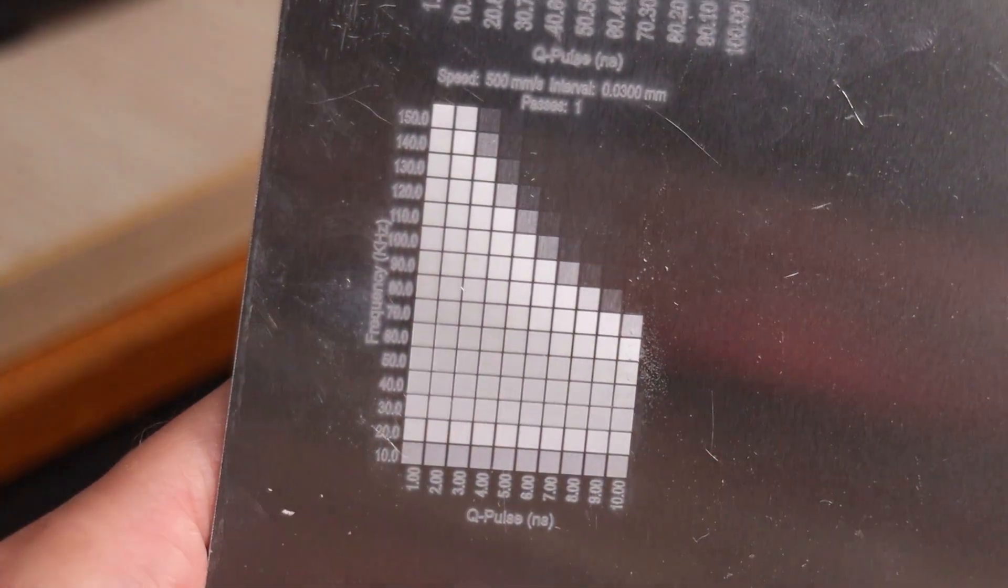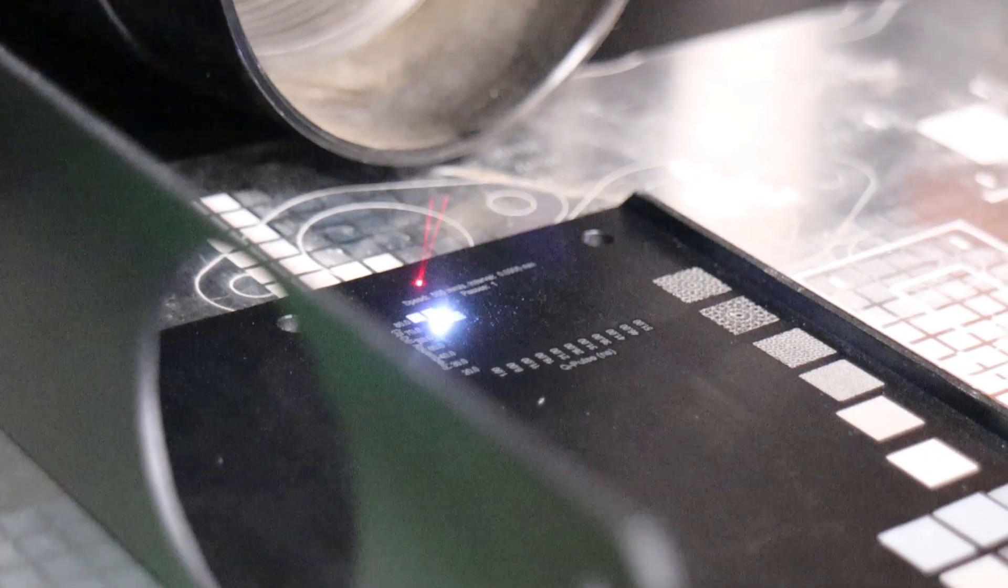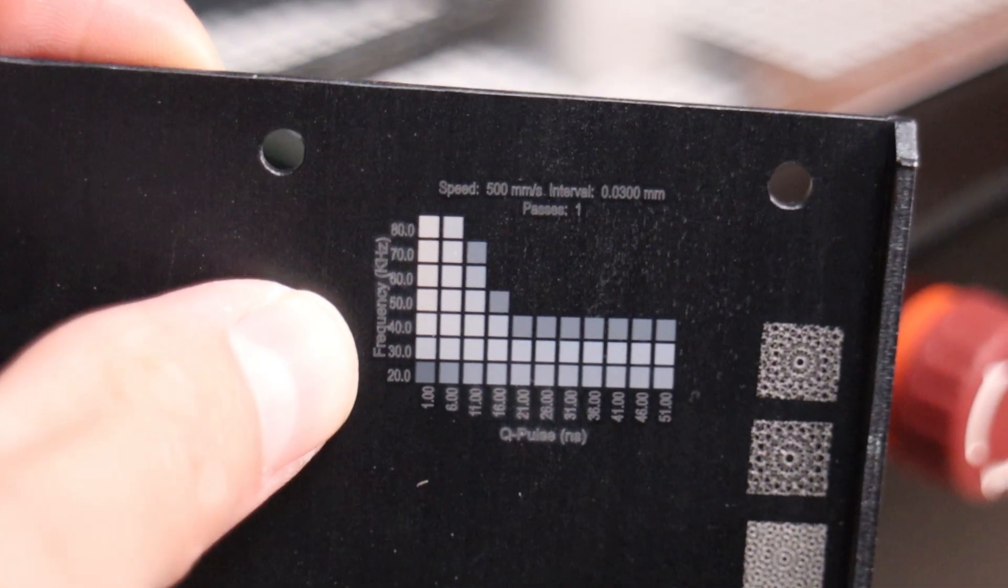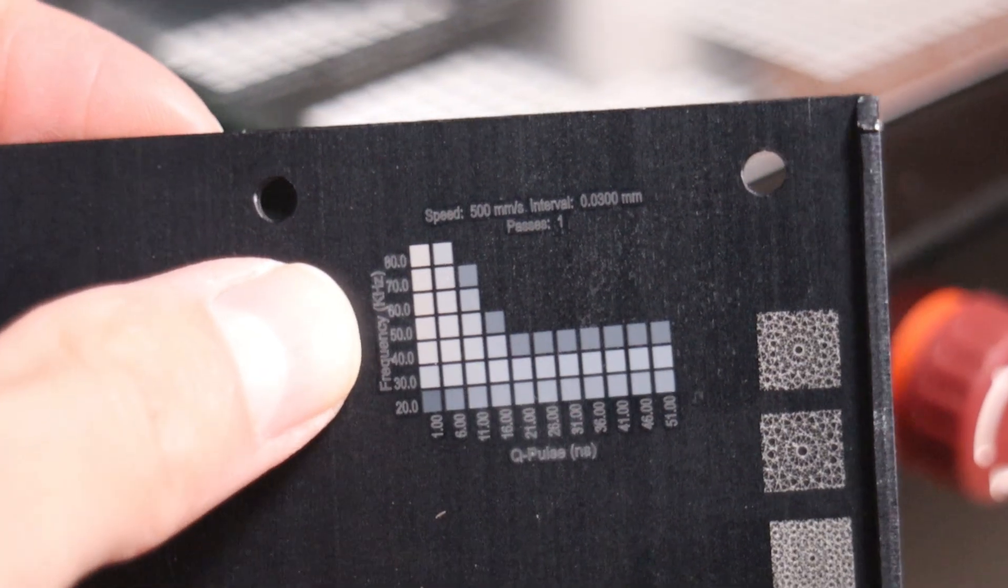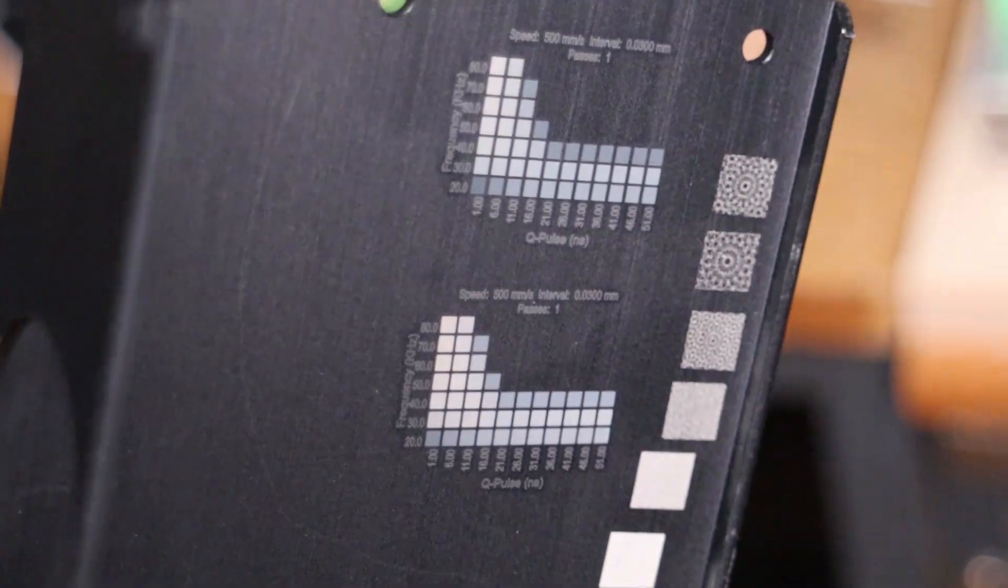Some settings produced dark, deep engravings, while others created shallow, bright white marks. I also did a quick test on anodized aluminum, and I was easily able to make perfect white engravings at many different parameters, which means that this laser has a lot of power available. I also tried a cross-hatching mode, and the result was even better.